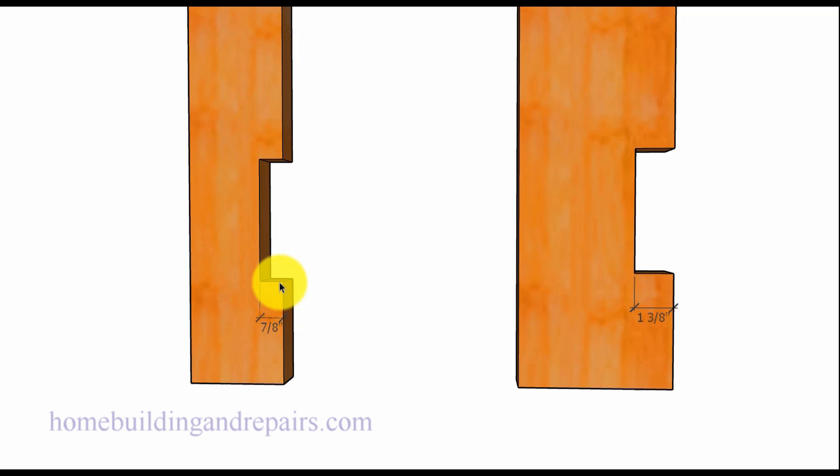The maximum depth you can notch these studs is going to be 25%, seven eighths of an inch on a 2x4, an inch and three eighths on a 2x6. Another thing that the building codes are suggesting will be to avoid drilling any types of holes in the area behind the notch.